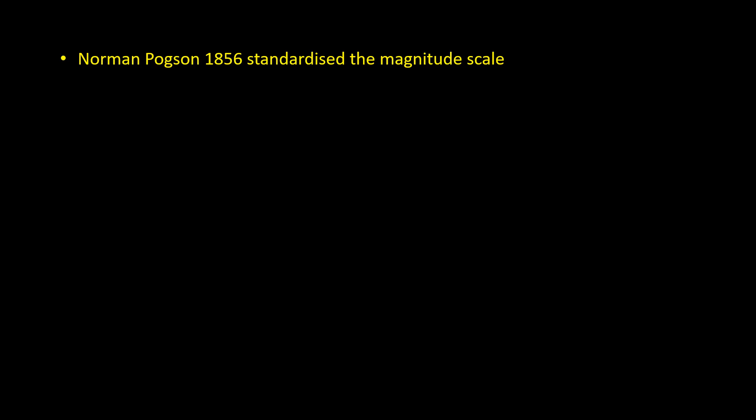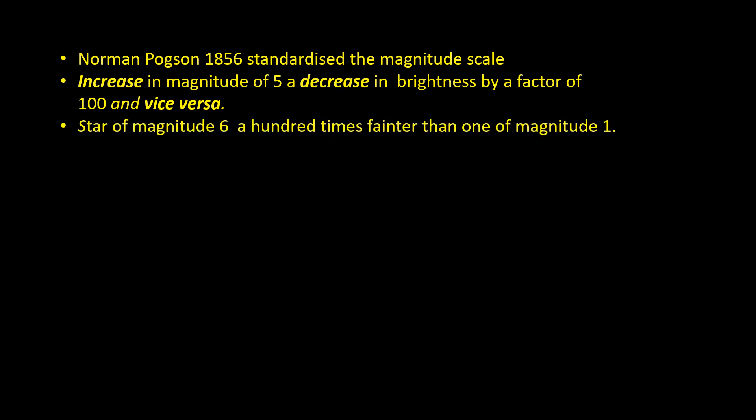In 1856, the British astronomer Norman Pogson standardized the magnitude scale to make an increase in magnitude of 5 a decrease in brightness by a factor of 100 and vice versa. So for example, a star of magnitude 6 is 100 times fainter than one of magnitude 1.